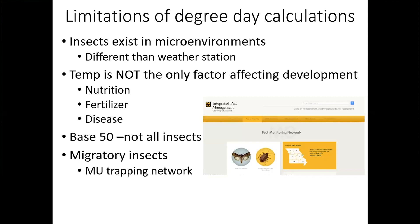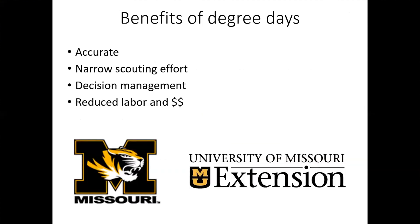Lastly, the University of Missouri has a pest monitoring network for migratory species. Fall armyworms and black cutworms migrate into our state from southern states, so their development isn't associated with degree days in the same way. We have that information available on the website. The benefits of tracking degree days are that they're accurate from year to year, they reduce scouting effort, and help with management decision-making.